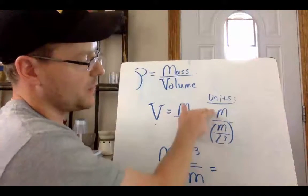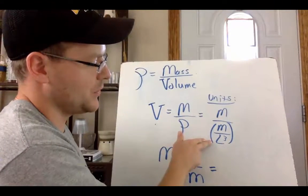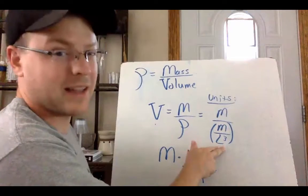So if I just look at the units here, I'm left with mass divided by mass per unit volume. So mass divided by mass divided by length cubed.